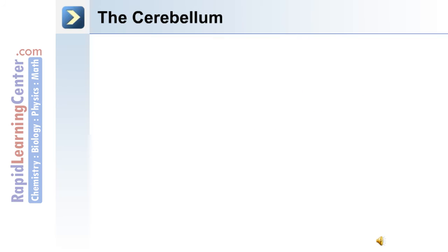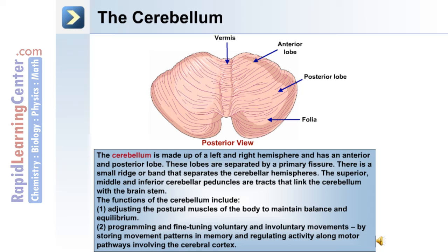Adjacent to the brainstem is the cerebellum, made up of left and right hemispheres with an anterior and posterior lobe separated by a primary fissure. The superior, middle, and inferior cerebellar peduncles are tracts linking the cerebellum with the brainstem. The functions of the cerebellum include adjusting the postural muscles to maintain balance and equilibrium, and programming and fine-tuning voluntary and involuntary movements by storing movement patterns in memory and regulating activity along motor pathways involving the cerebral cortex.